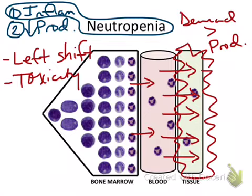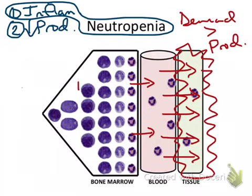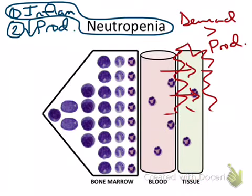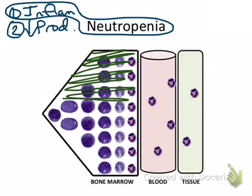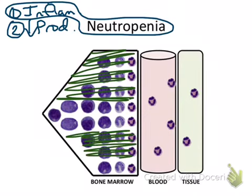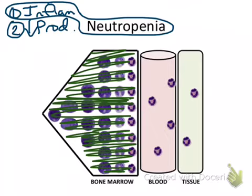The second cause of neutropenia is decreased production — the bone marrow fails to produce enough neutrophils to meet the peripheral demand. You can have hypoplasia, where production is present but decreased, or complete aplasia, where no neutrophils are being produced at the level of the bone marrow.